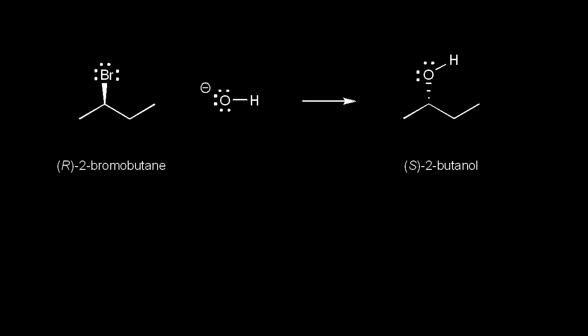In the last video, we looked at the mechanism for the SN2 reaction. The hydroxide ion functions as a nucleophile and attacks our electrophile at this carbon. Since the SN2 mechanism is concerted, the nucleophile attacks the electrophile at the same time that the leaving group leaves. Bromine leaves as the bromide anion, and the OH, the nucleophile, substitutes for our leaving group. So for our final product, we now have an OH attached to our carbon chain.